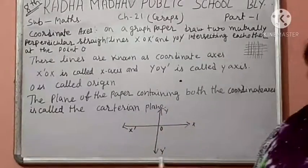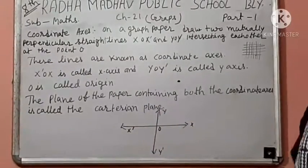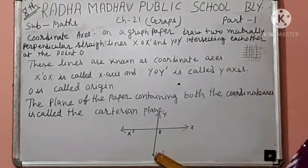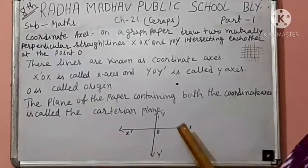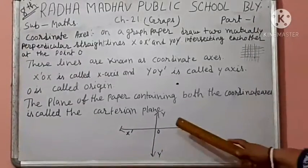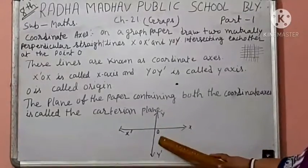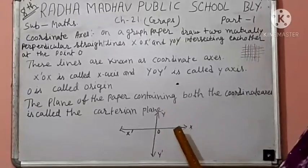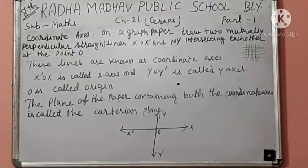This is the figure. In this figure, two lines are mutually perpendicular, X O X dash and Y O Y dash, intersecting each other at the point O. These lines are known as coordinate axes.